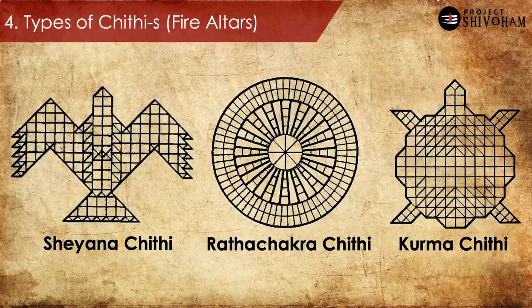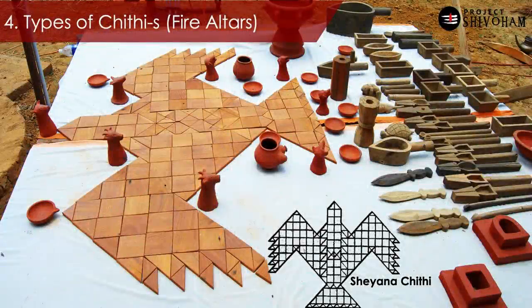As you can see the shapes of the bricks or tiles — square, rectangle, trapezium, and triangles both isosceles and equilateral. The essence of Sulbhasutras is all about making these bricks and constructing these fire altars. Here is a prototype of Shena Chiti. Shena means Garuda or a falcon. Just observe the shapes of these tiles: right-angle triangles, isosceles triangles, squares, rectangles, and many other geometric shapes. This is a miniature prototype of Shena Chiti.